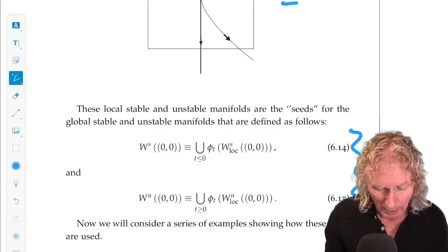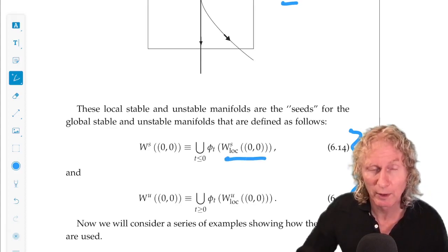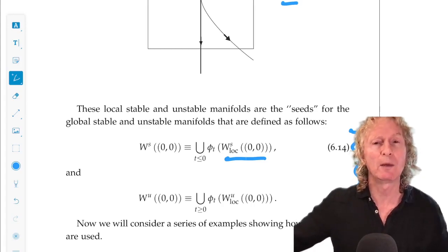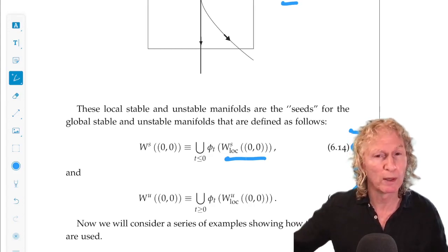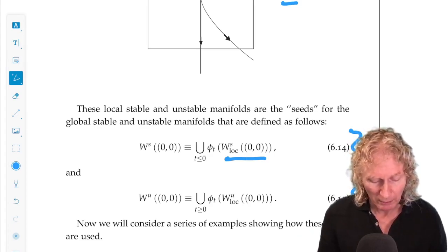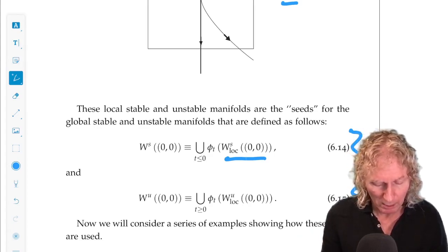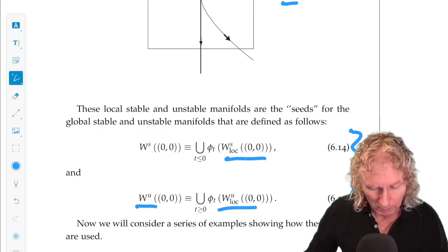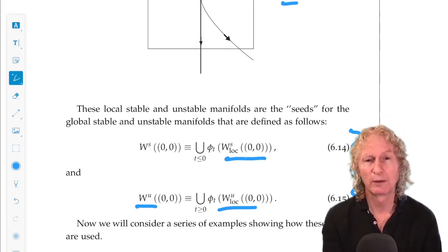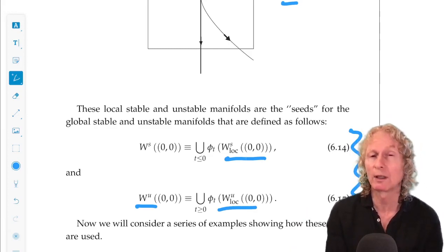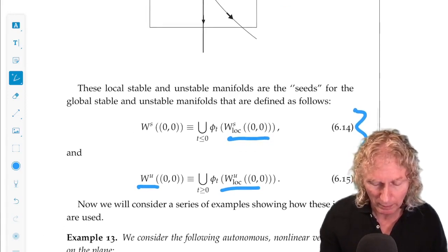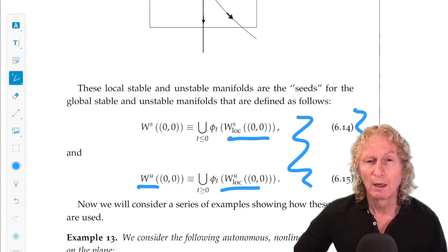For the stable manifold, we take the little local piece that we've constructed, and we let it flow. We ask where it came from. And that will be all the points that go into the box. And similarly, for the unstable manifold, we let it evolve out of the box in forward time. So where does it go? And if we evolve it backward in time, it comes into the box.